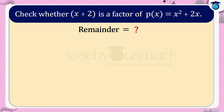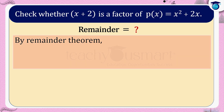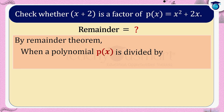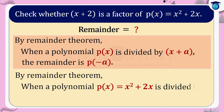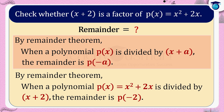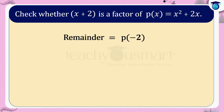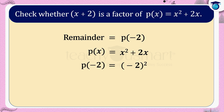Let's see what the remainder is. By the remainder theorem, when a polynomial p of x is divided by x plus a, the remainder is p of minus a. So when p of x equals x squared plus 2x is divided by x plus 2, the remainder is p of minus 2. We have p of x equals x squared plus 2x, so p of minus 2 equals minus 2 whole squared plus 2 multiplied by minus 2, equals 4 minus 4, equals 0.